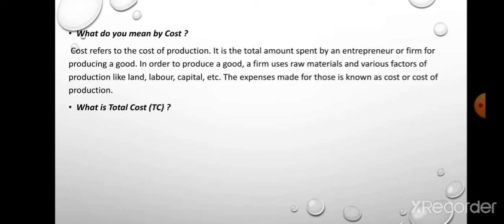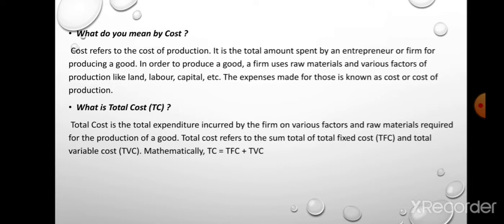What is total cost? Total cost is the total expenditure incurred by the firm on various factors and raw materials required for the production of a good. Total cost is the sum total of total fixed cost and total variable cost. Mathematically, TC = TFC + TVC, or total cost equals total fixed cost plus total variable cost.